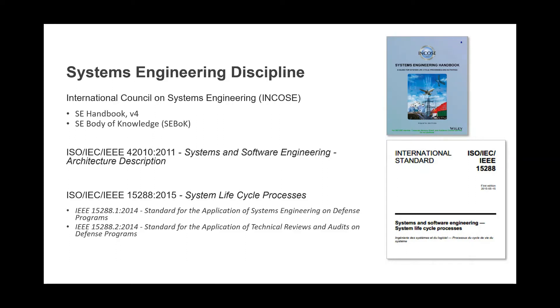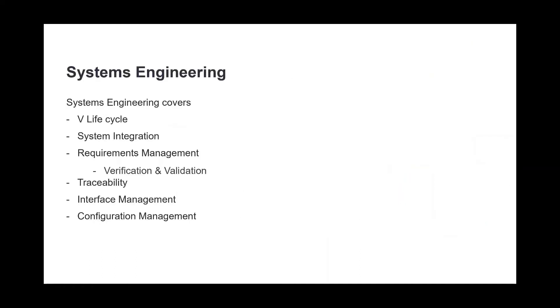Systems engineering is a core aspect of delivering a project or product. From now on I'll primarily use the term 'project' because of my infrastructure background, but consider it synonymous with product — at the end of the day you have to deliver something, a system as a whole. Systems engineering basically encompasses system integration and requirements management. Requirements management has two key elements: verification and validation, which we'll touch upon. I'll primarily focus on the lifecycle and requirements management.